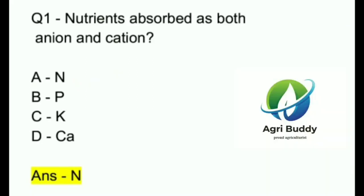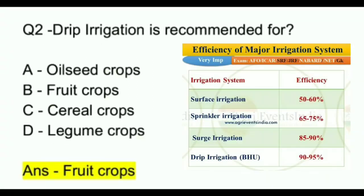Question 2. Drip irrigation is recommended for? A. Oilseed crops. B. Fruit crops. C. Cereal crops. D. Legume crops. And the answer is Fruit crops.